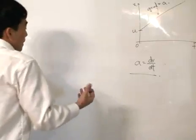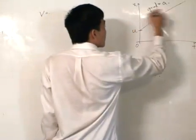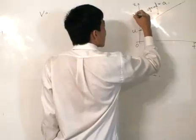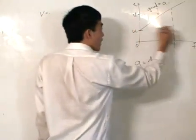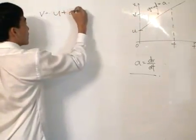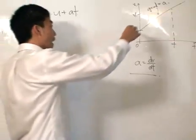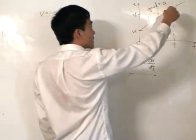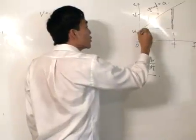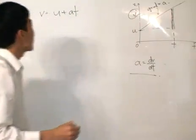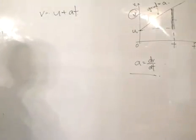Let's draw out some equations from this graph. v is a value at a certain point, and at time t, v equals u plus at. That's easy enough to understand: when t is 0, we get the initial velocity u. At time t, we just add up the acceleration times the change in time to get the change in velocity, and u plus that gives us the final velocity.